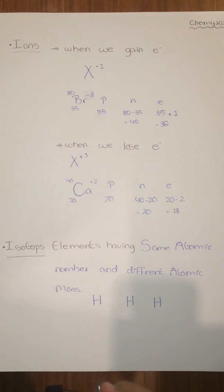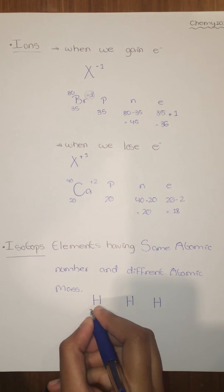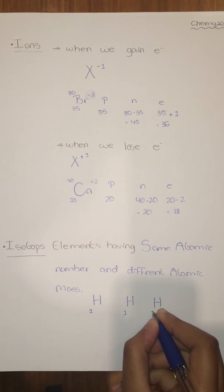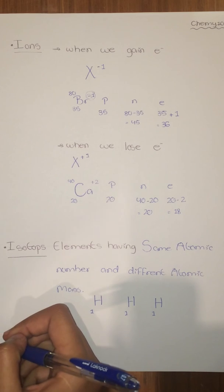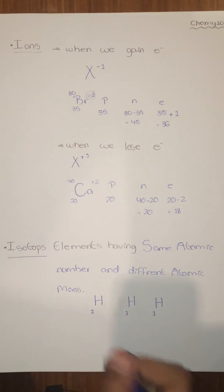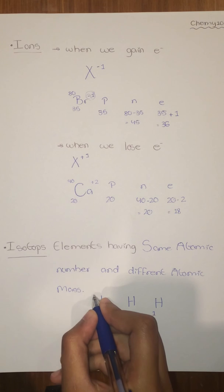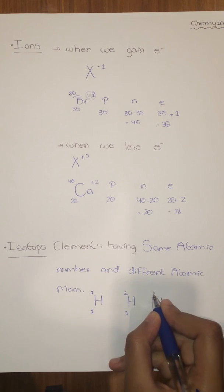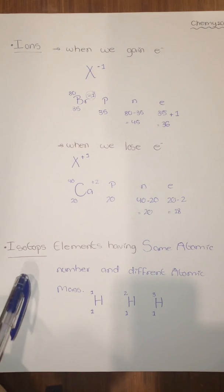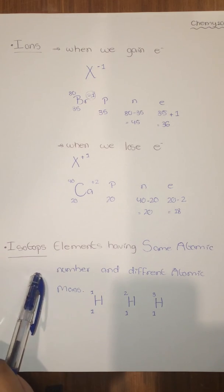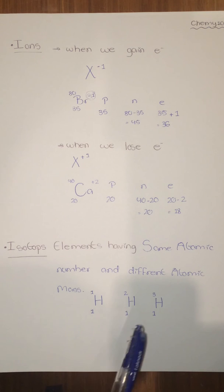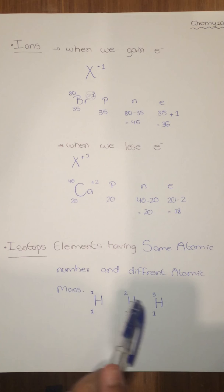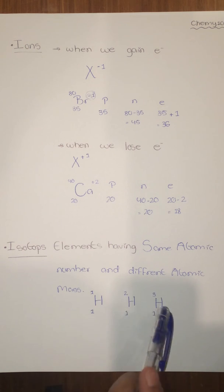As an example, take hydrogen (H). We have a fixed atomic number equal to one, but different atomic masses. Here we have mass one, then mass two, and then mass three — three isotopes of hydrogen. The isotopes will help us find the average atomic mass later in different chapters.